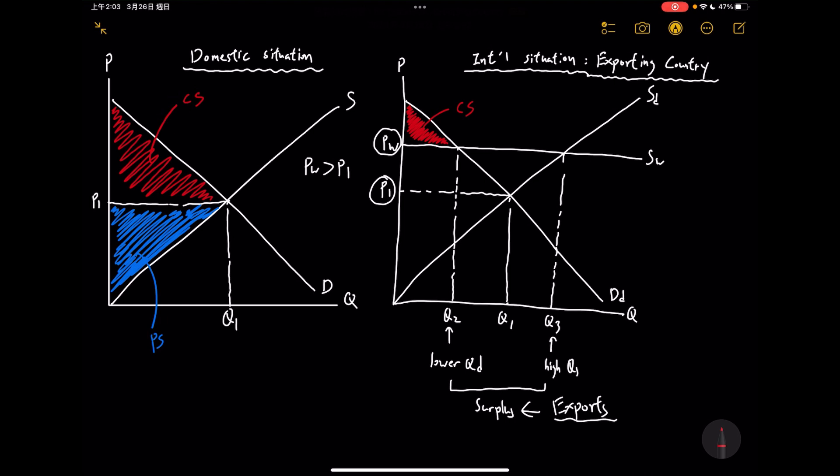We can talk about this by saying CS is actually going down compared to our domestic situation, because P is going up and Q is also going down, which is pretty sad for the domestic consumers. But what about the domestic producers now? Because now we are setting a higher price, that's one thing, but we are also selling more goods not only to the domestic consumers but also more importantly people around the world, the foreign consumers.